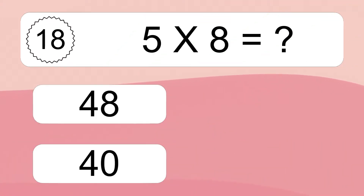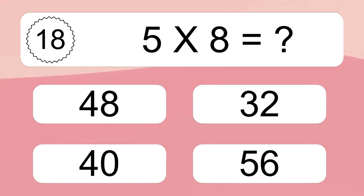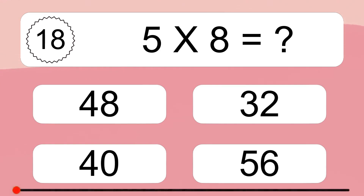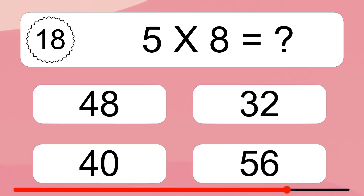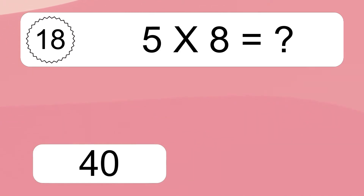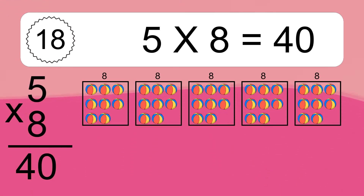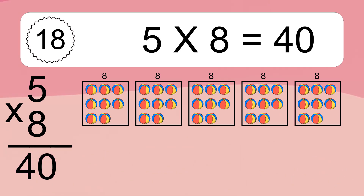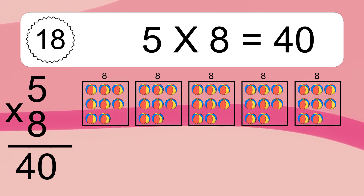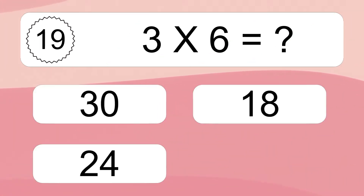5 times 8 equals what? 5 times 8 equals 40. We have 5 boxes, and each box has 8 colorful balls inside. If you count all the balls in all the boxes together, you will have 5 times 8 balls. This equals 40 balls.